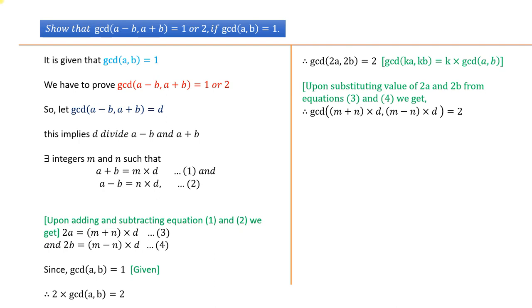This equals d × GCD(m + n, m - n) = 2. We have used the same formula as given above.